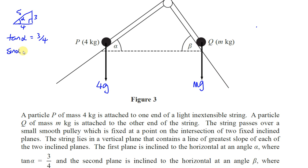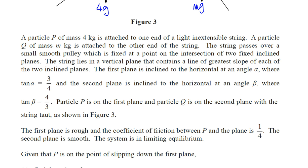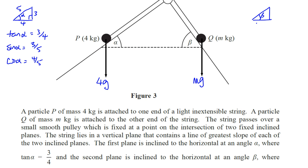And cos alpha must be 4 over 5. The second plane is inclined to the horizontal at an angle of beta. It says tan beta is equal to 4 over 3 — the opposite is 4, the adjacent is 3, and the hypotenuse is still 5. So sine of beta is 4 fifths, and the cosine of beta is 3 fifths.